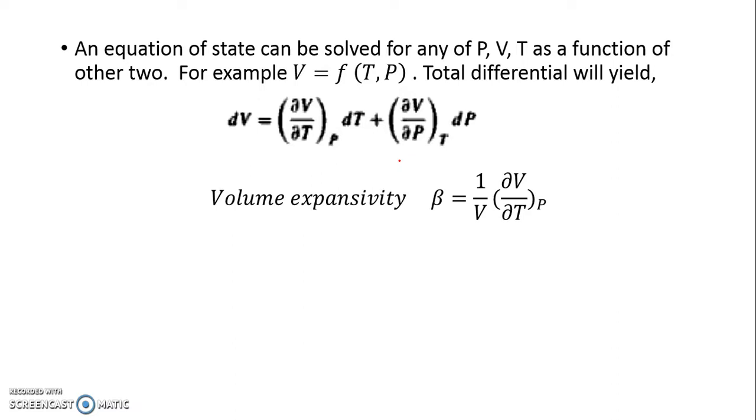We define volume expansivity β, which is how volume changes with temperature at constant pressure. With constant pressure, the volume naturally will be more as temperature increases. So this β is a positive term.